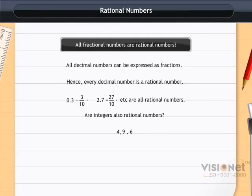Consider the integers 4, 9, -6. All these integers are rational numbers as we can write them in the form of p by q where q is equal to 1 in each of them.